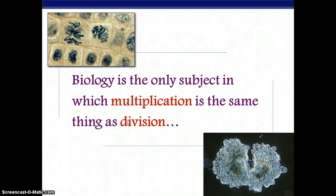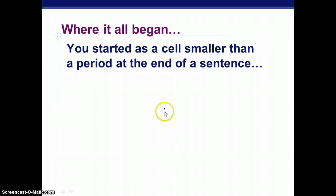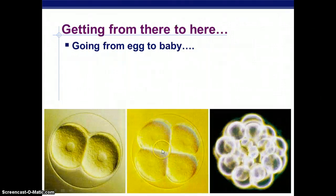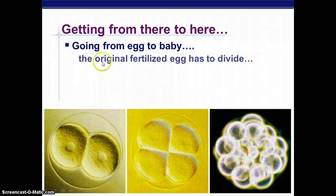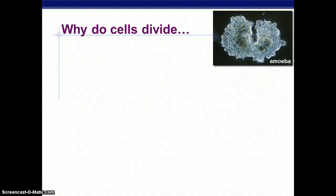We're going to jump into cell division and talk about mitosis. Mitosis is the process of making new cells. Where it all began for you — you actually started smaller than this dot right here. And you got so big, but how did that actually happen? It happened through mitosis. Going from egg to baby, what actually happened is that the original fertilized egg divided and kept dividing until you got to the size you are now.